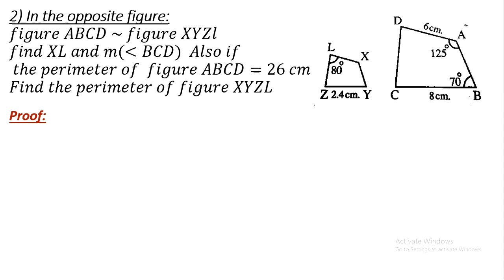The second example: in the opposite figure, figure ABCD is similar to figure XYZL — we have two similar quadrilaterals. We need to find the length of XL, the measure of angle BCD, and if the perimeter of figure ABCD equals 26 centimeters, find the perimeter of figure XYZL.